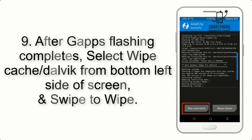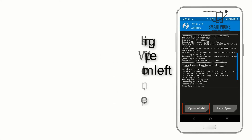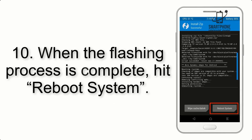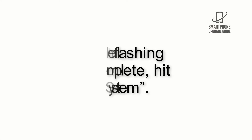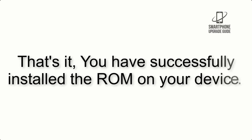Step 8: Flash the GApps zip package in the same manner. Step 9: After GApps flashing completes, select Wipe Cache and Dalvik from the bottom left side of the screen and swipe to wipe. Step 10: When the flashing process is complete, hit Reboot System. That's it — you have successfully installed the ROM on your device.